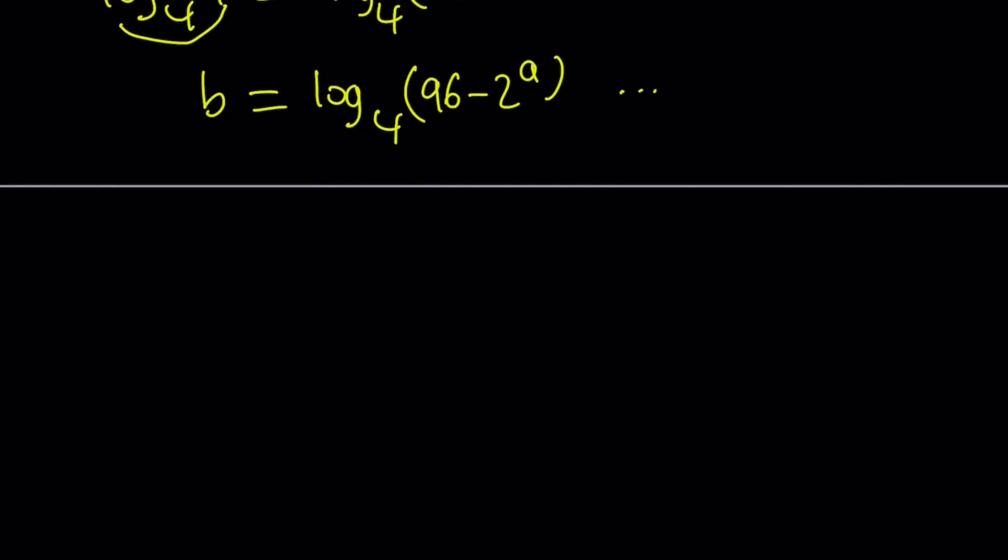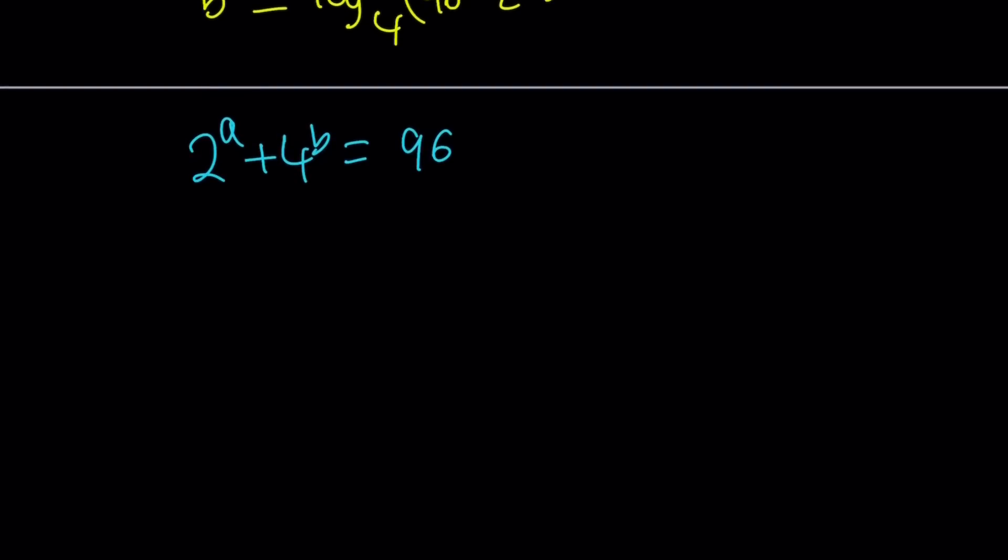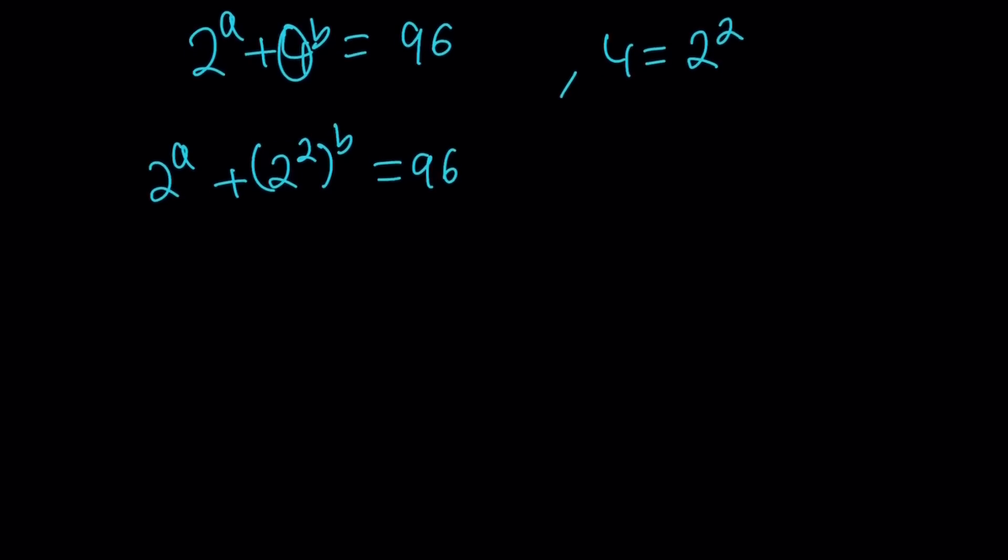So first of all, this is the original problem. You probably already guessed some of the solutions at least. First of all, notice that 4 can be written as 2 squared. So we can replace this with 2 to the power a plus 2 to the second to the power b equals 96. And then, the rule tells us to multiply the exponents. So we get something like this where a and b are integers.